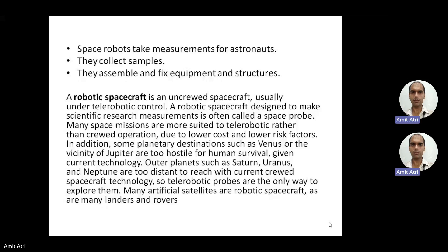Outer planets such as Saturn, Uranus, and Neptune are too distant to reach with current crewed spacecraft technology, but large distances can be covered using tele-robotic technology. Many artificial satellites are robotic spacecraft, as are many landers and rovers.